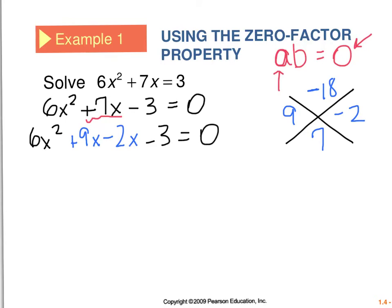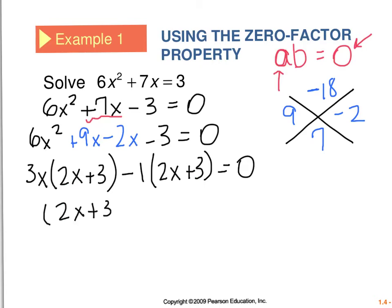And now I'm going to factor by grouping. So I take the first two terms, 6x squared and 9x, and I can factor out a 3x. So factoring out a 3x, I get 2x plus 3. And the second two terms I can factor out a negative 1, which leaves me with 2x plus 3. And now the common term is the 2x plus 3 that I factor out. So my final factor form is 2x plus 3 and 3x minus 1 equals zero.